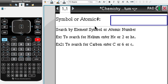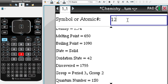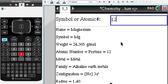Let's say you don't know your element symbol, but you know its atomic number. Well, you can just put in, let's try 12—magnesium.